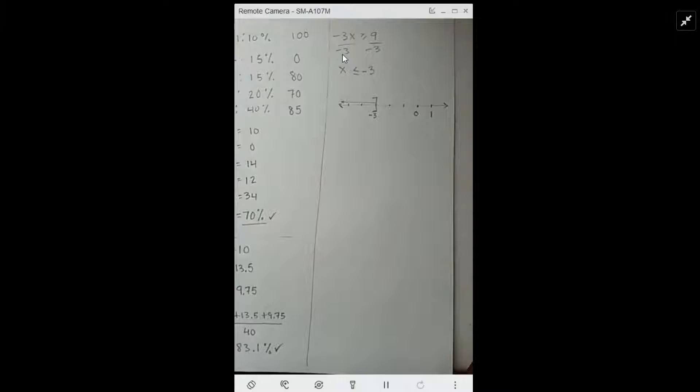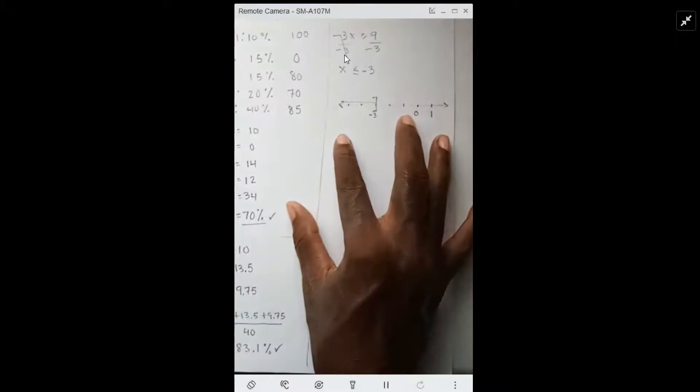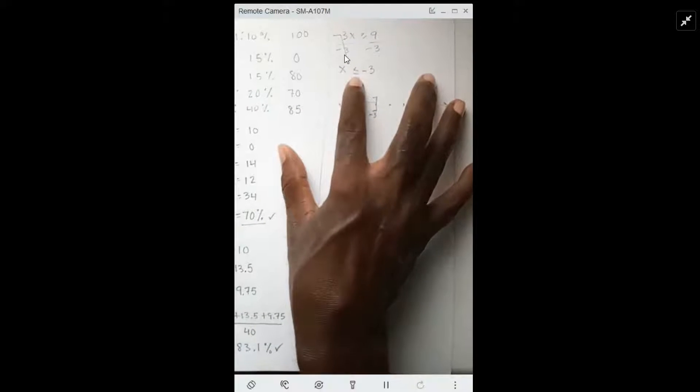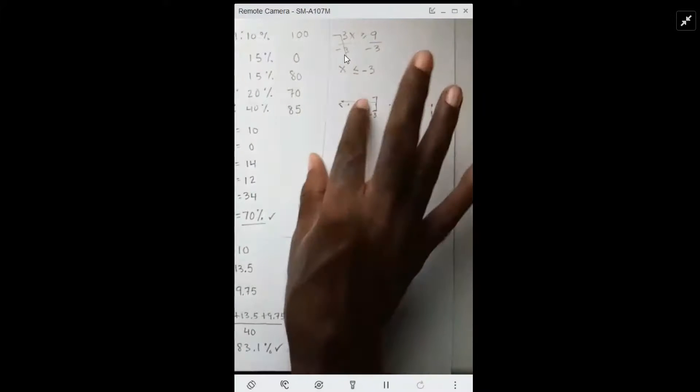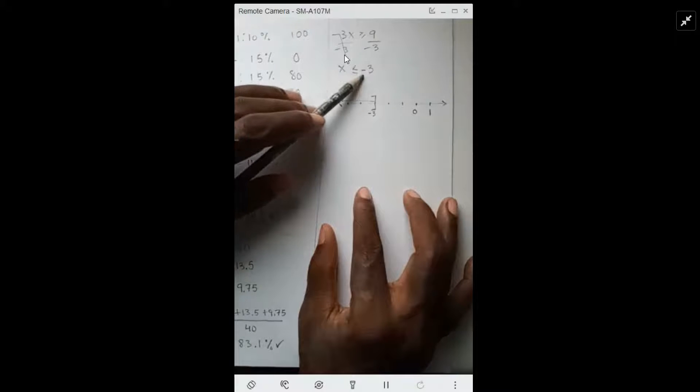We divide both sides by negative 3. The negative 3s cancel. And when we divide by negative 3, remember this is a special case where your inequality flips. And so x becomes less than or equal to negative 3.